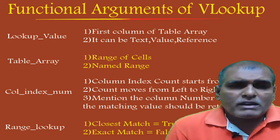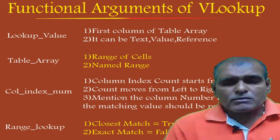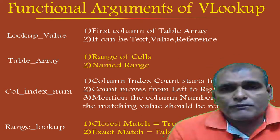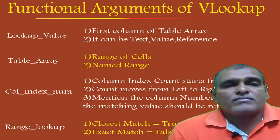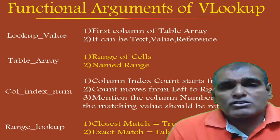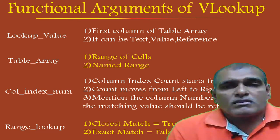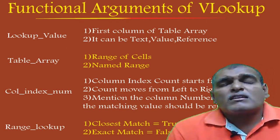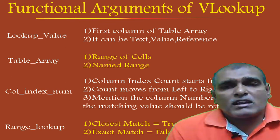Now let me explain one by one. Here you can find the four functional arguments of VLOOKUP. The first functional argument is lookup value. The lookup value should be in the first column of the table array. It can be a text value or a reference — we can consider either of the options.